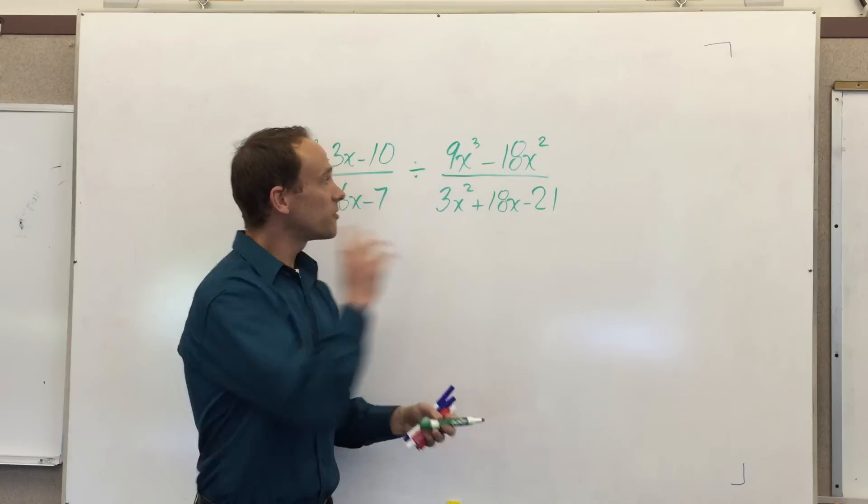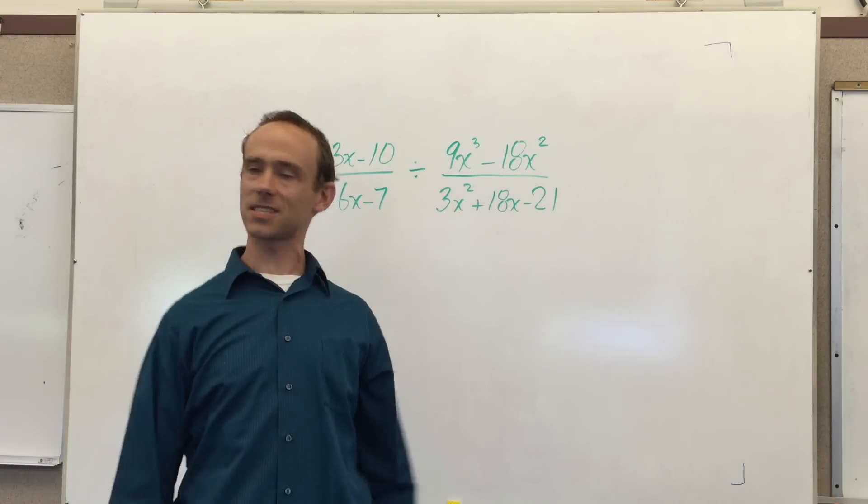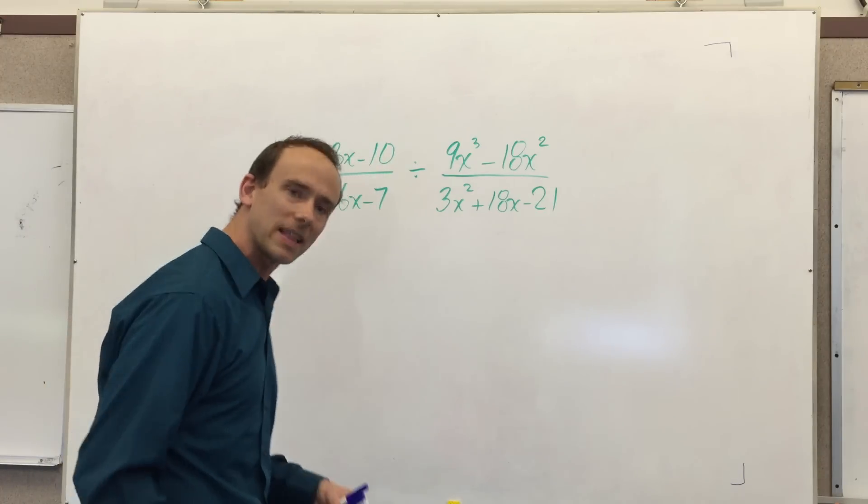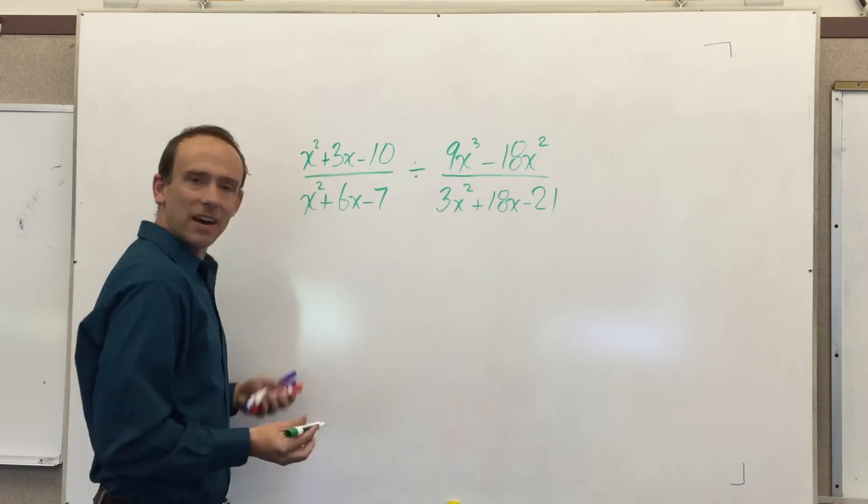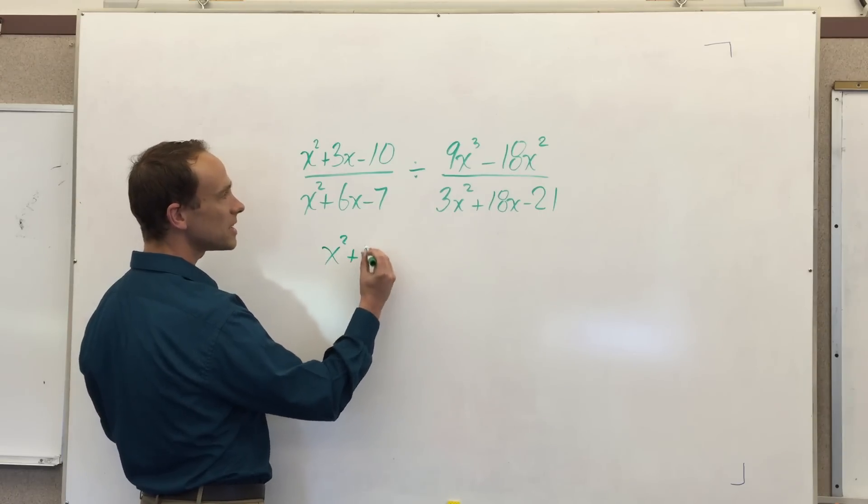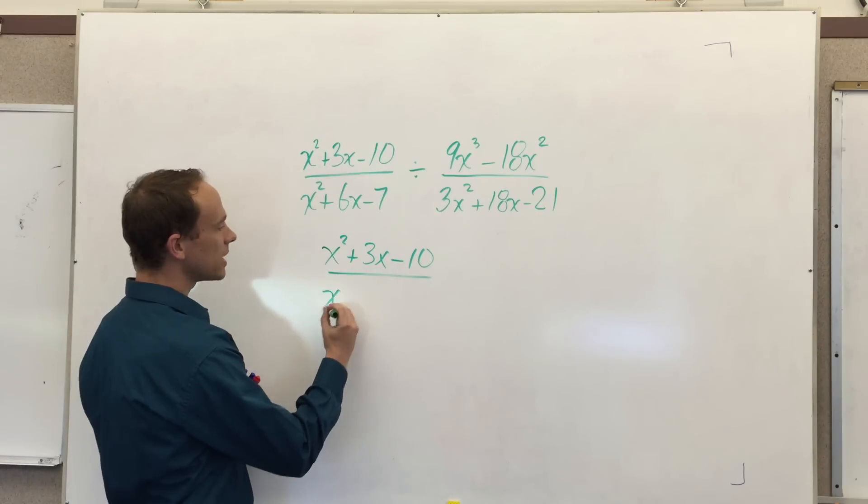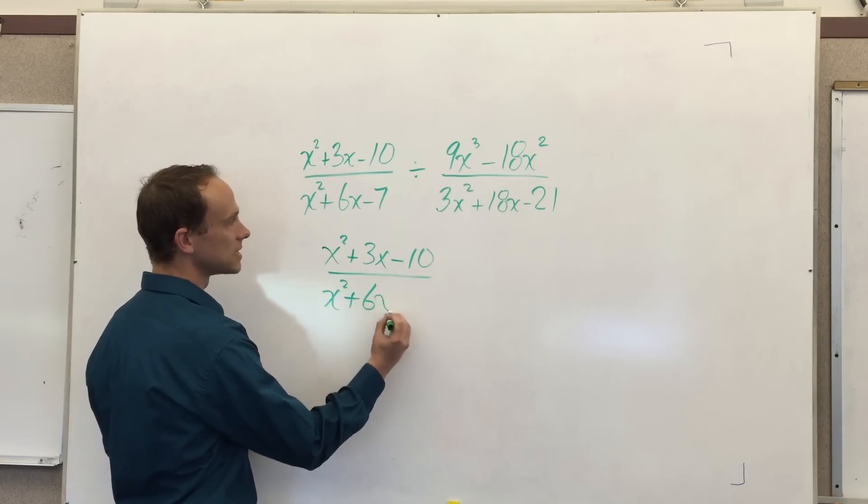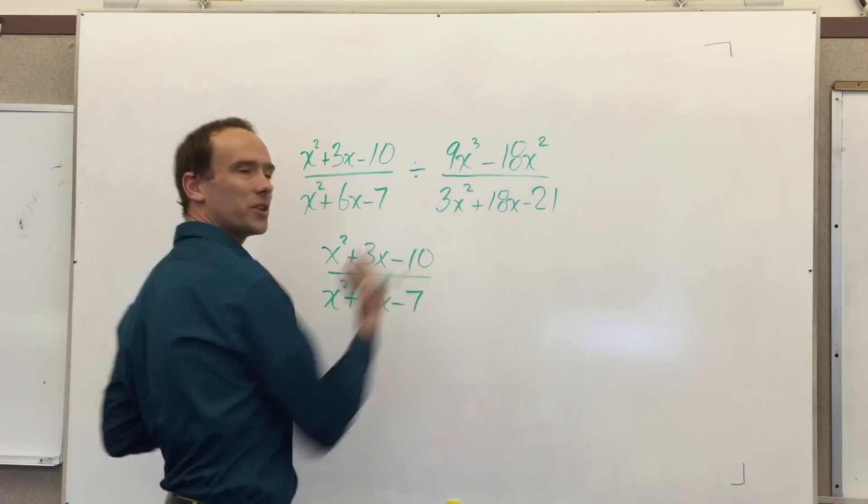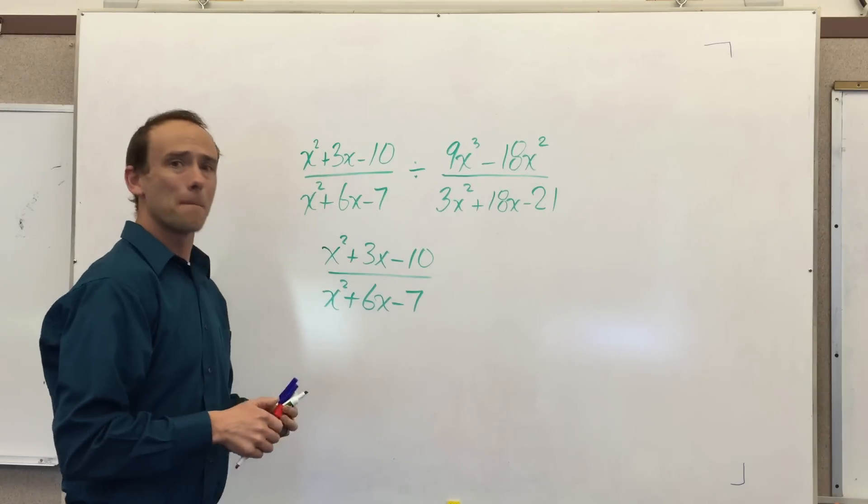If you're gonna divide rational expressions, first thing you've got to remember is that we don't really divide fractions. Instead of dividing, what we do is we invert and then we multiply. So I'm gonna rewrite this: x squared plus 3x minus 10 all over x squared plus 6x minus 7. I just always invert the one on the right. You can invert the one on the left if you want. It's all good. It don't matter.